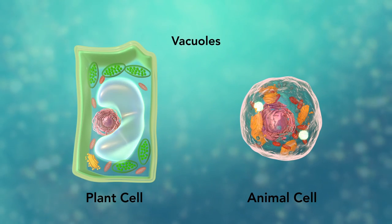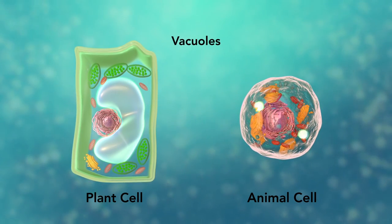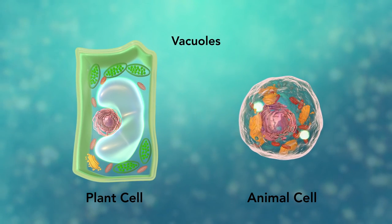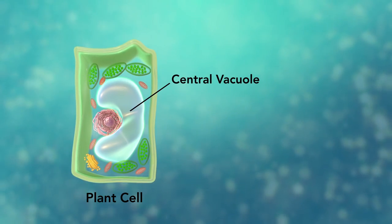Vacuoles are sac-like structures that store different materials. Here, in this plant cell, the central vacuole stores water.